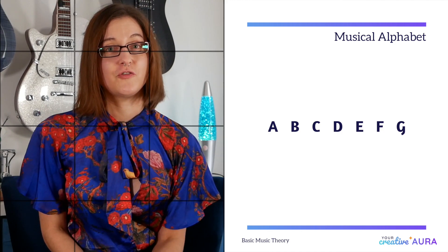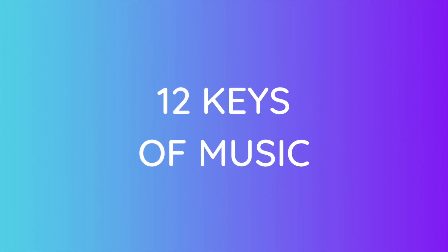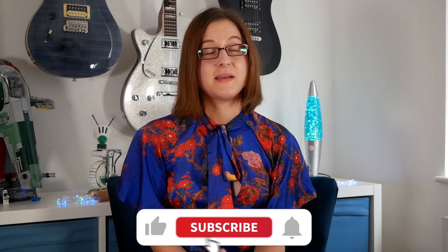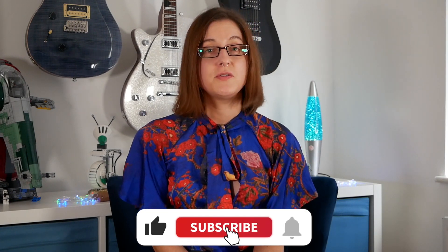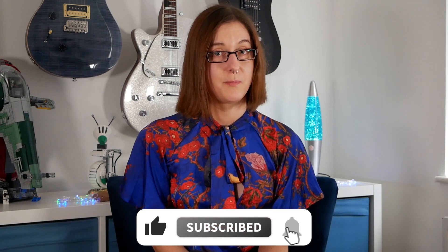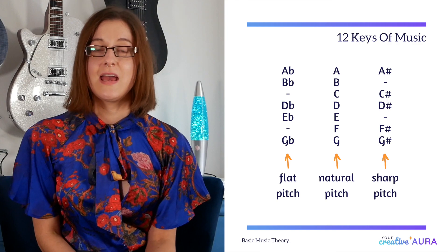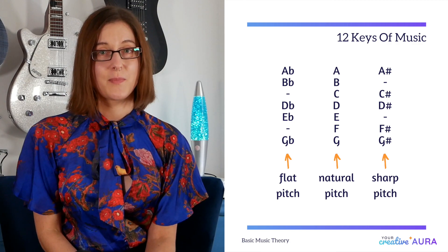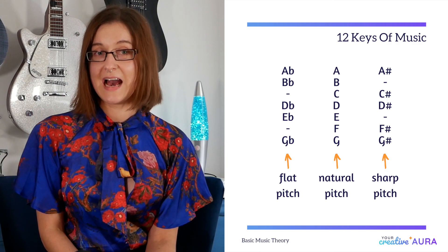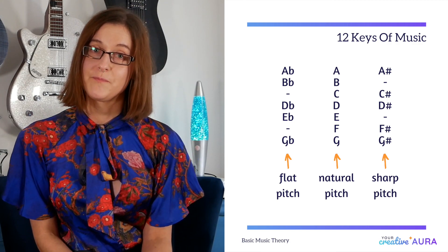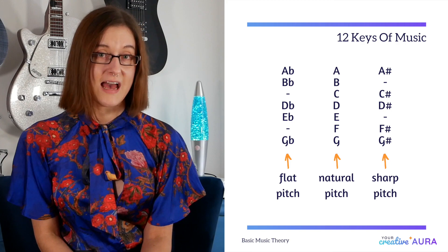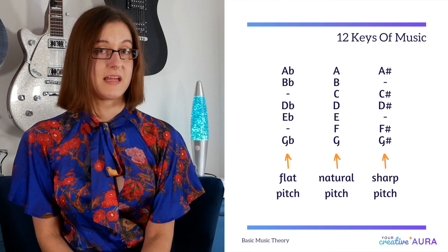So let's move on to the 12 keys of music. Each letter of the musical alphabet can be distinguished by its own unique natural pitch, as well as their sharp or flat pitch. A sharp has a slightly higher pitch than the natural, and a flat has a slightly lower pitch.